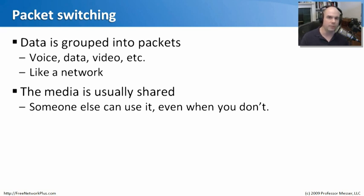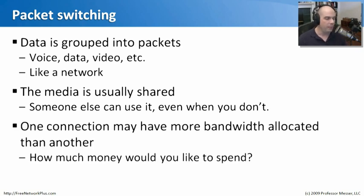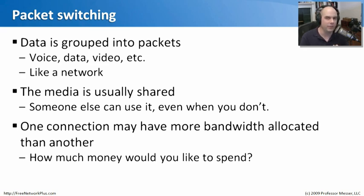The media itself is usually shared with other people. You don't see those other people on a WAN link, but the provider is allowing other people to take advantage of the resources they've built centrally. Generally, our costs are a little bit less than circuit-built technology. Even when you're not using the network, other people can take advantage of the lines, fiber, and equipment the provider has put in place. One connection may have more bandwidth allocated than another — it just depends on how much money you want to spend. The provider can build out a big infrastructure, carve out pieces just for you, and even provide guarantees on traffic throughput, even though it's a shared resource.